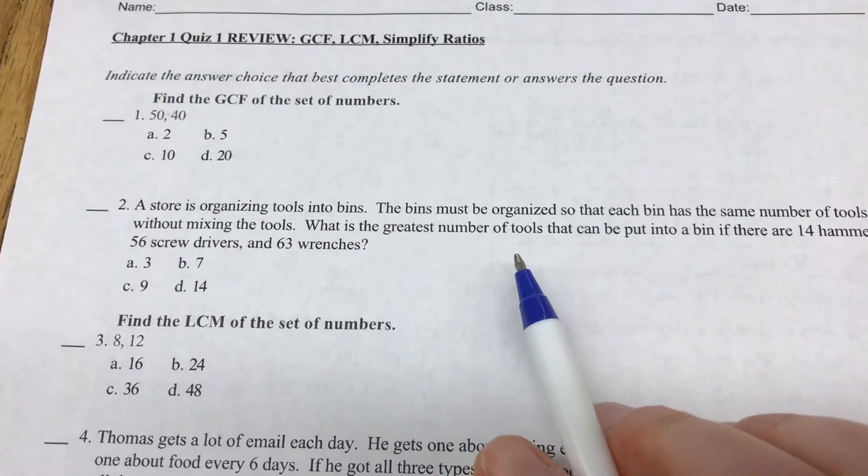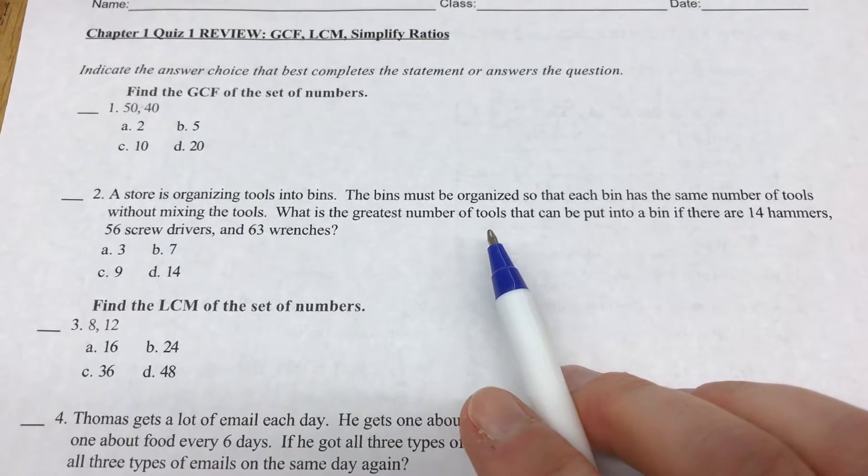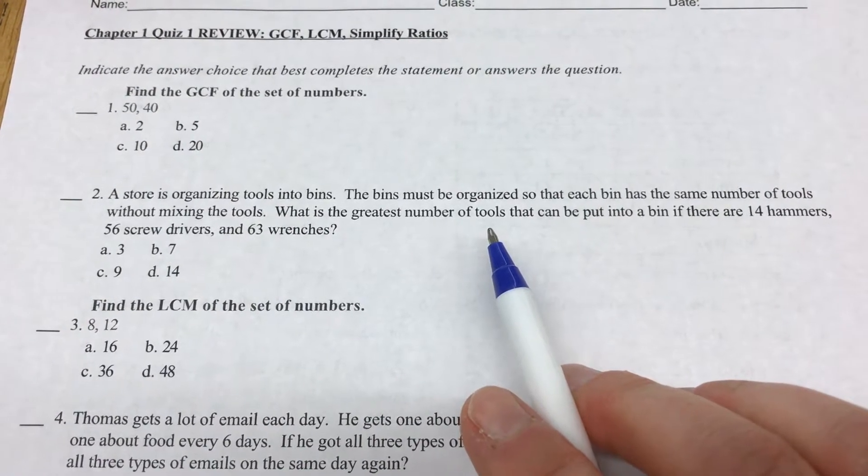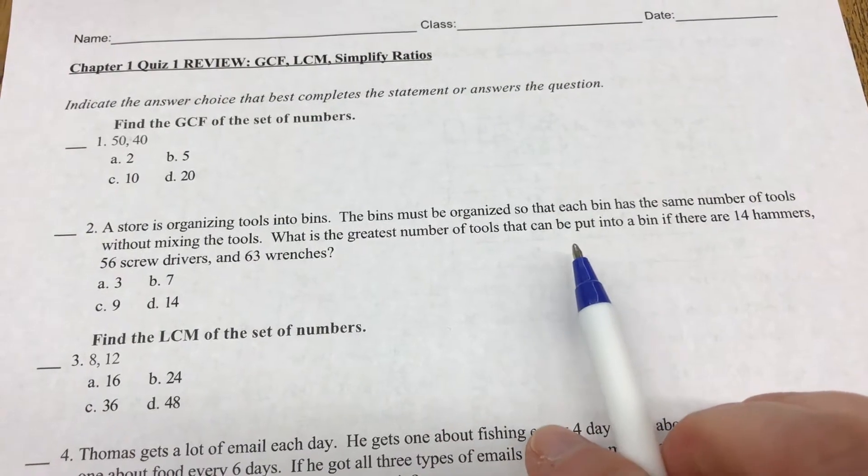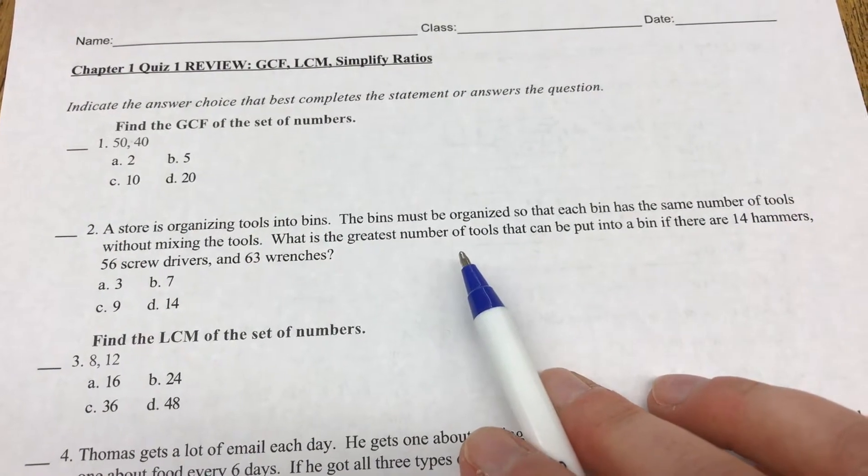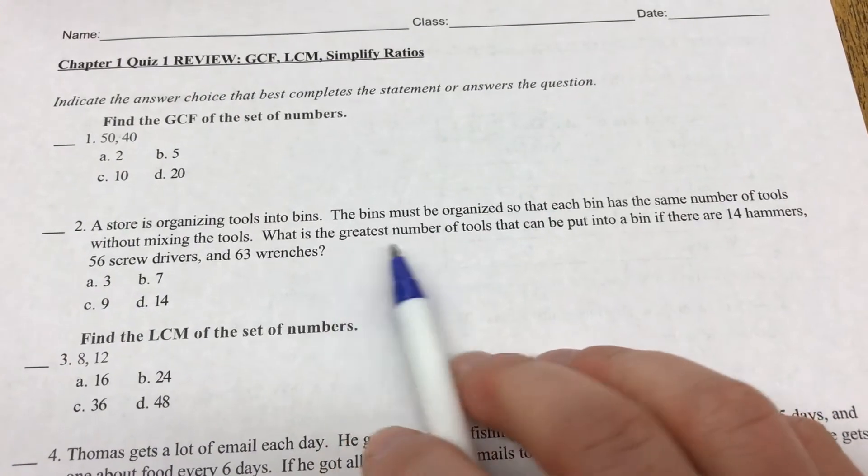For number 2, a store is organizing tools into bins. The bins must be organized so each bin has the same number of tools without mixing the tools. What's the greatest number of tools that can be put into a bin if there are 14 hammers, 56 screwdrivers, and 63 wrenches?